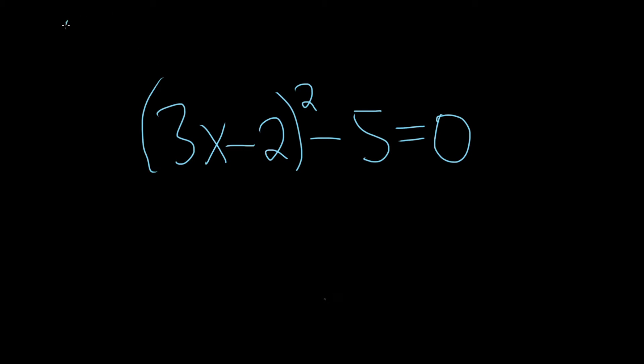So the square root property says if you have a variable, which I'll call x, squared, equal to a number, what you can do to solve for x is simply take the square root of both sides. And when you do that, on the left-hand side, you just get x, and on the right-hand side, you get a plus or minus, and then here we have the square root of a.